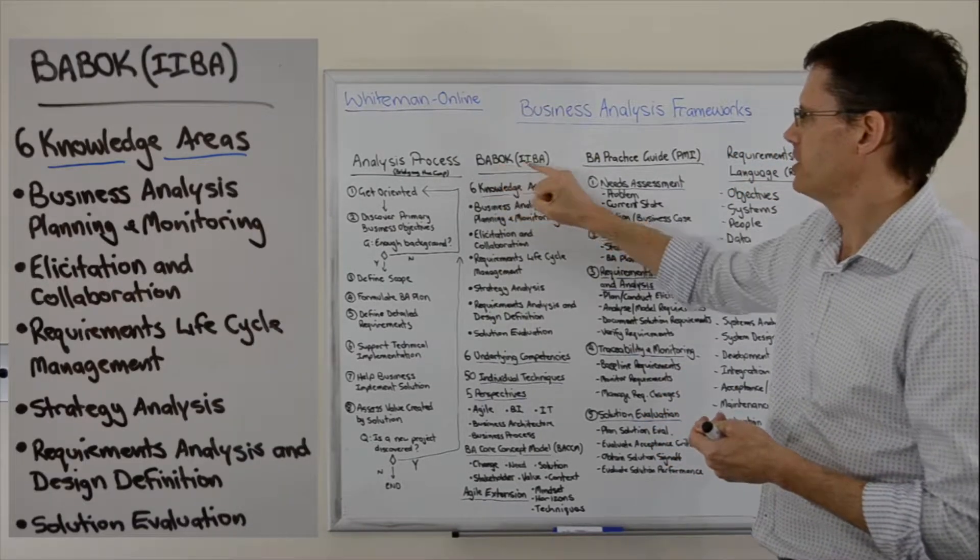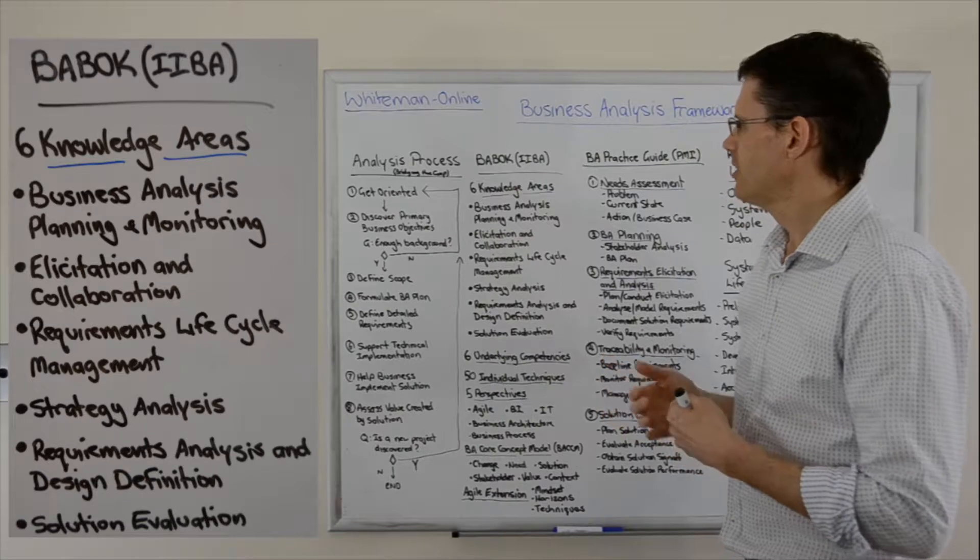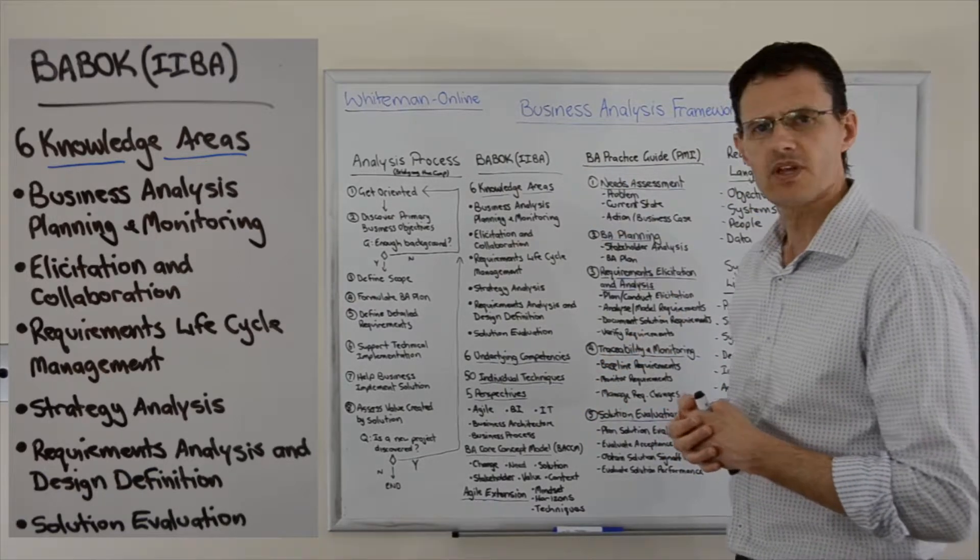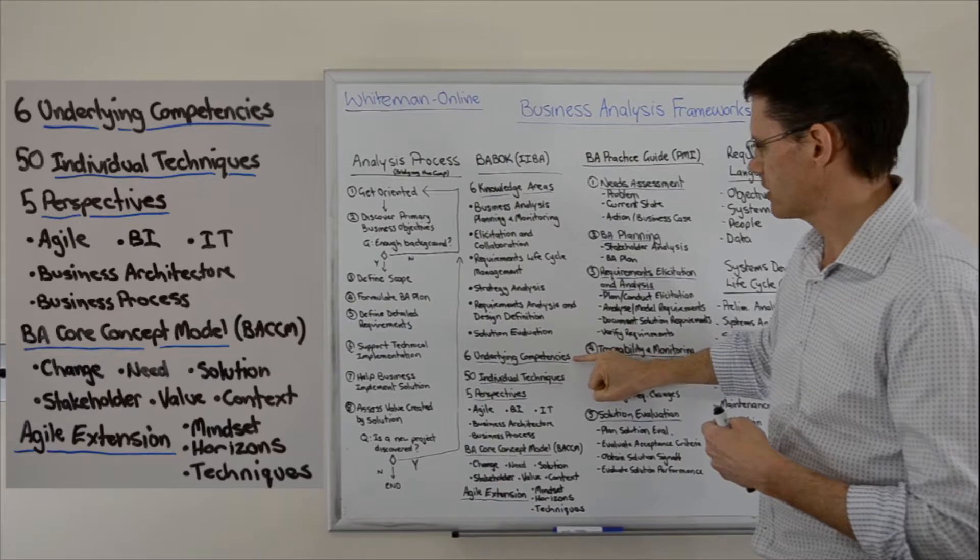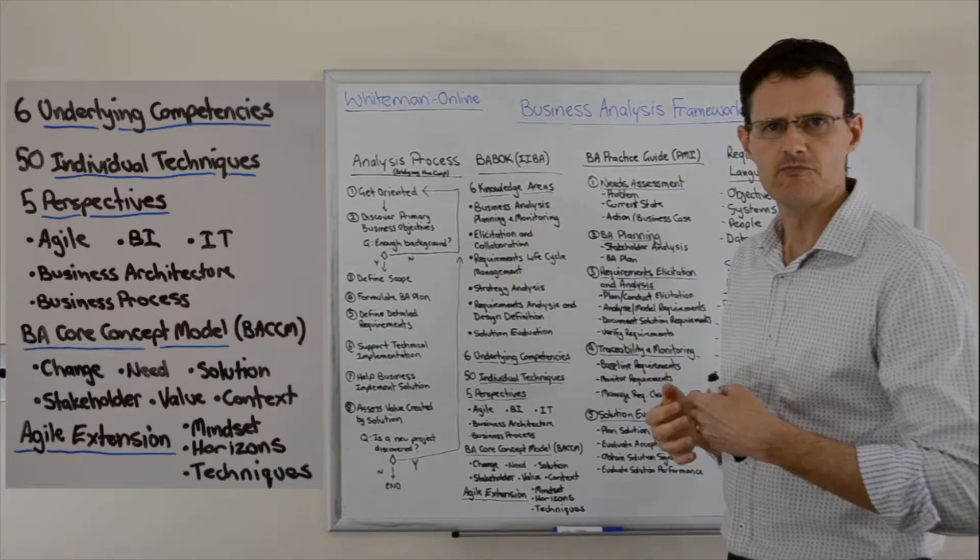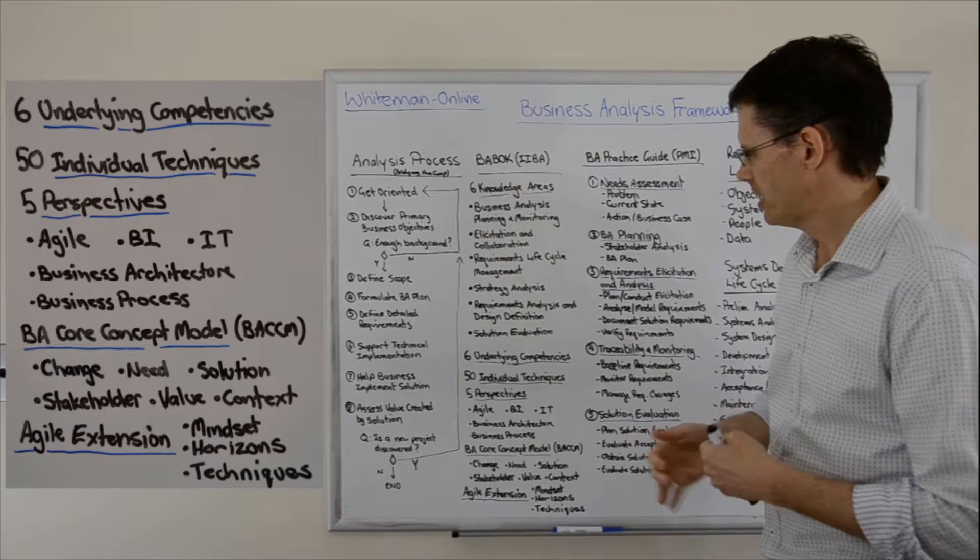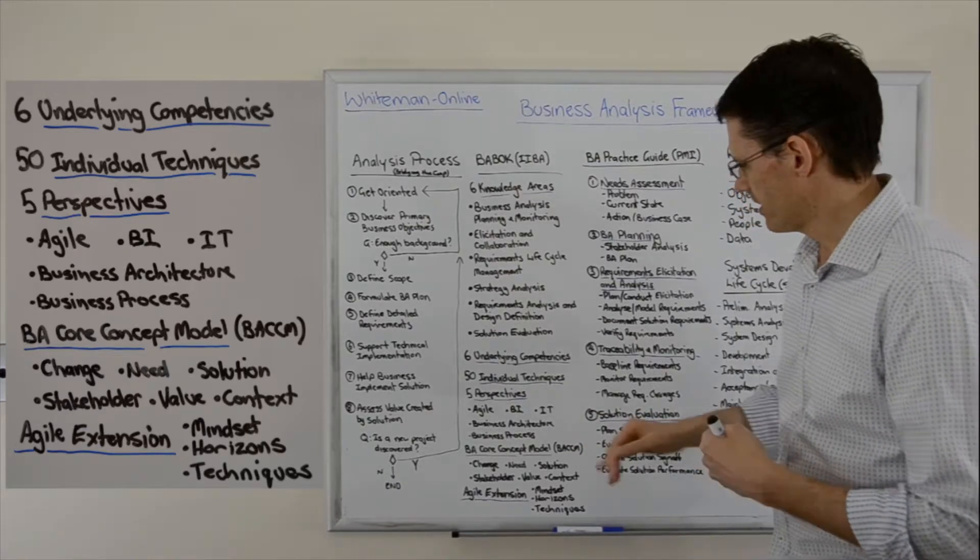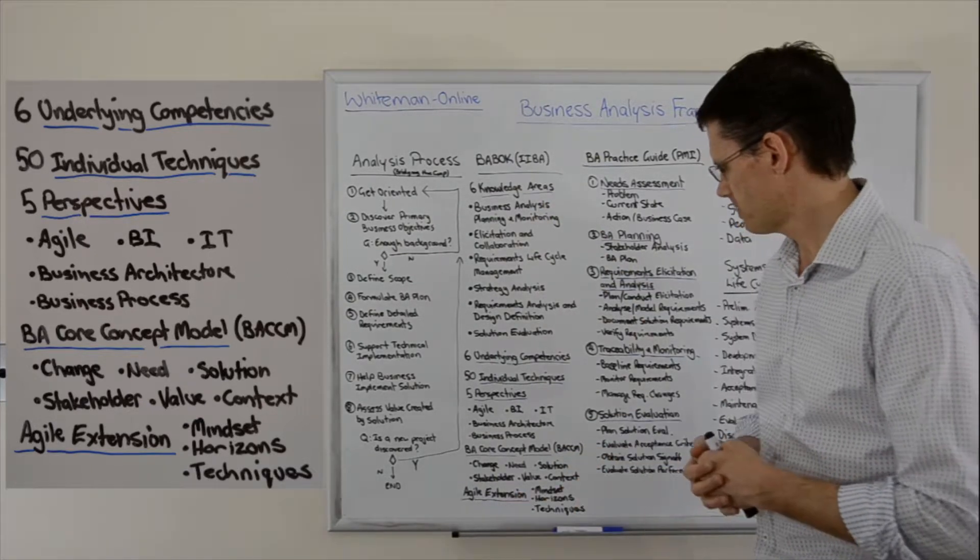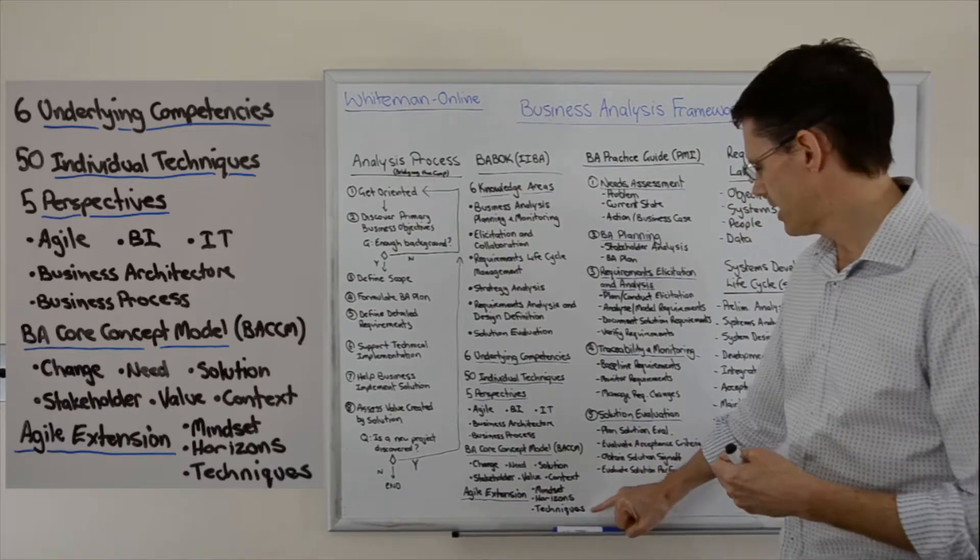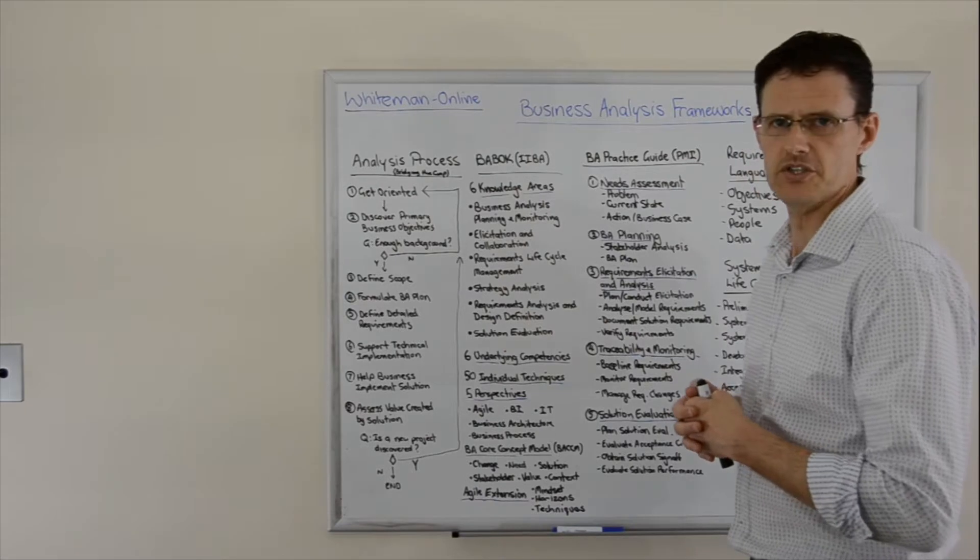Moving on to the Business Analysis Body of Knowledge by the International Institute of Business Analysis. This is not a process but more a collection of techniques grouped into six knowledge areas. There are underlying competencies described—the characteristics of a business analyst—and it groups into five perspectives for different types of environments. There's also a core concept model described. Additionally, there's an Agile Extension which is a separate document describing different mindsets, three different horizons, and its own techniques.